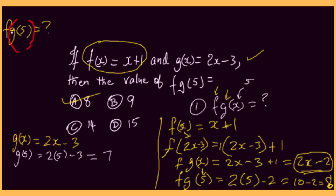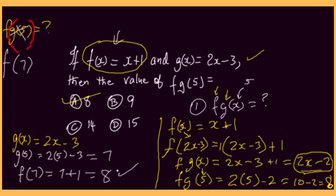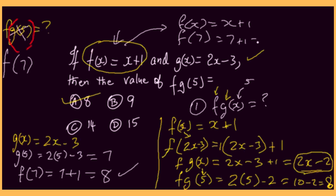So we're going to replace g of 5 with 7. In fact, we're finding f of 7, because 7 is really g of 5. We enter 7 into the f function, replacing x with 7. So f of x equals x plus 1, and since we're finding f of 7, it's 7 plus 1, which is 8. Again, the answer is 8.